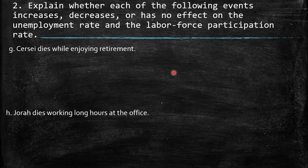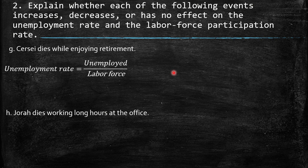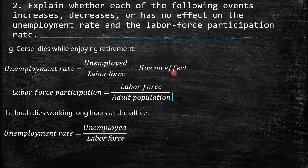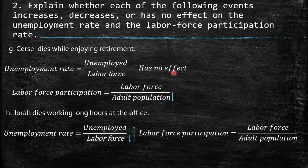G: Cersei dies while enjoying retirement. There is no effect on unemployment rate because she didn't belong to the unemployed or the labor force. However, because adult population decreases — since the BLS defines adults as over 16 — labor force participation increases. H: Jira dies working long hours at the office. The labor force decreases because she belonged to it as an employed person. The employed decreases, so there is an increase in the unemployment rate. Regarding labor force participation, labor force and adult population both decrease, so there is no effect.